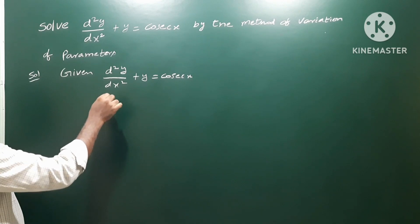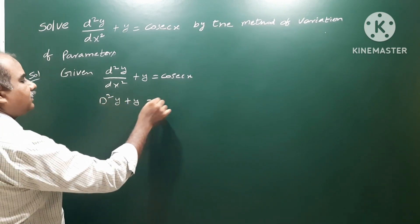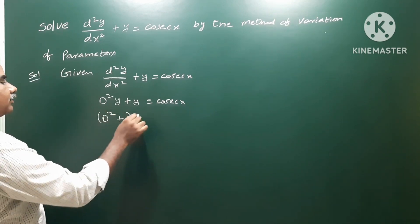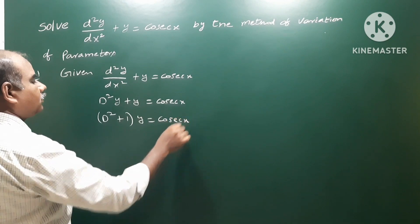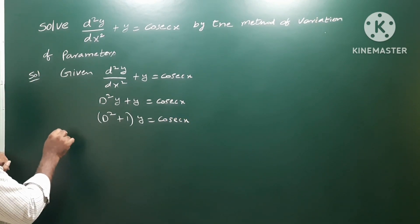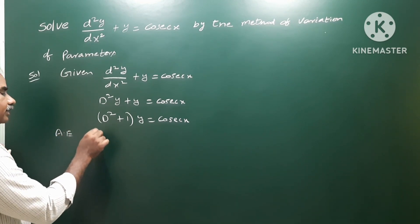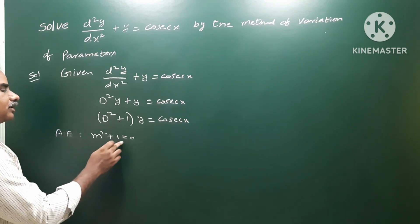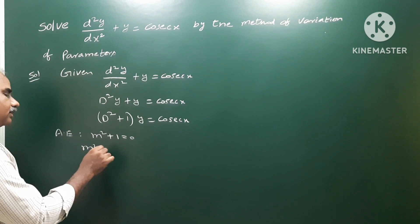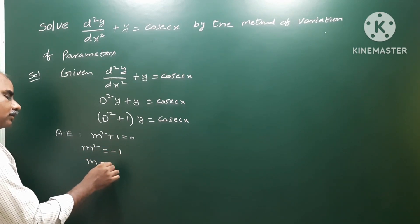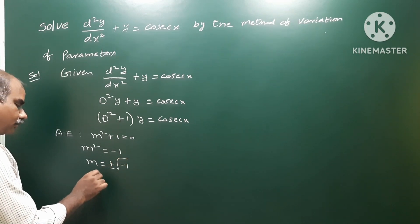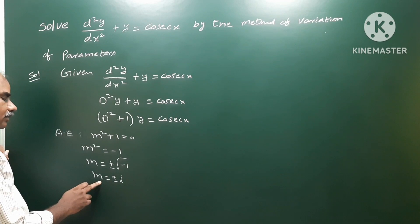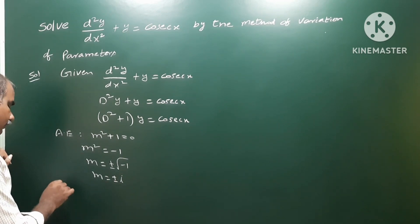This can be written as (D² + 1)y = cosec(x). Now write the auxiliary equation: m² + 1 = 0, taking m instead of D. So m² = −1, giving m = ±√(−1) = ±i. The auxiliary equation roots are ±i.